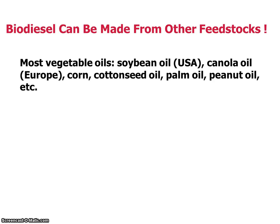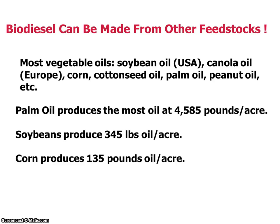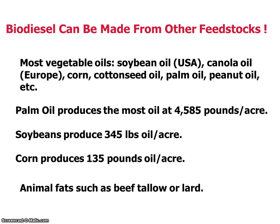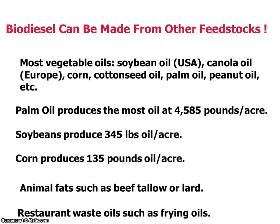Biodiesel can be made from several different feedstocks. Usually we're using vegetable oils such as soybean oil, canola oil, corn, cottonseed oil, palm oil, or peanut oil. Palm oil actually produces the most oil per acre at 4,585 pounds. Soybeans produce 345 pounds of oil per acre and corn produces 135 pounds of oil per acre. We'll also be using animal fats such as beef tallow or lard, or restaurant waste oils such as frying oils, as other feedstock types.